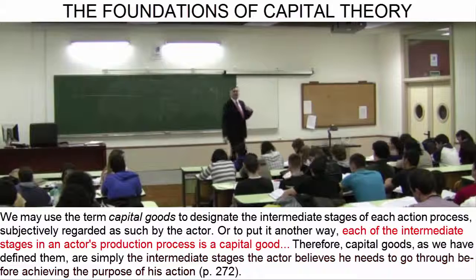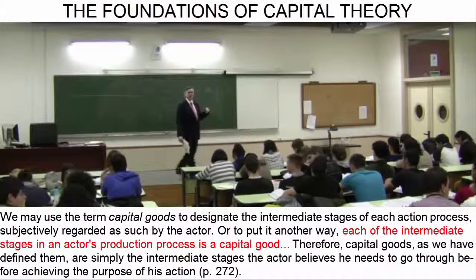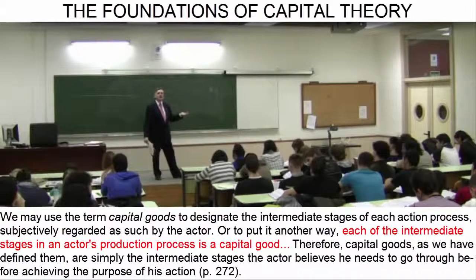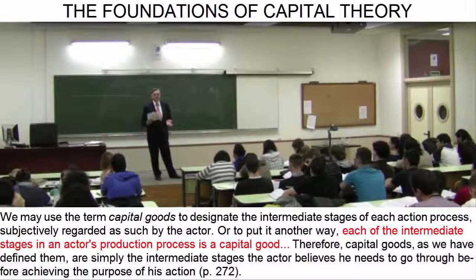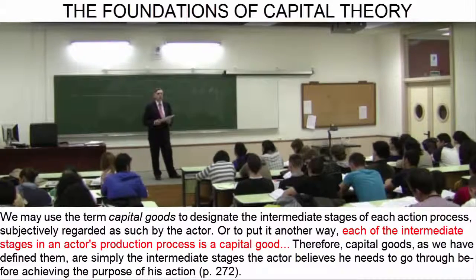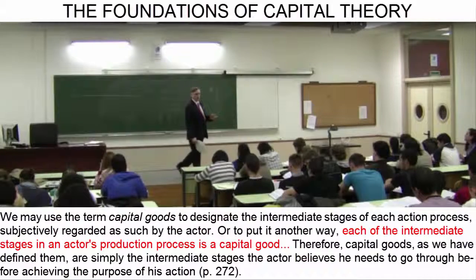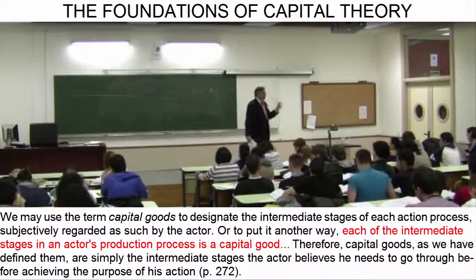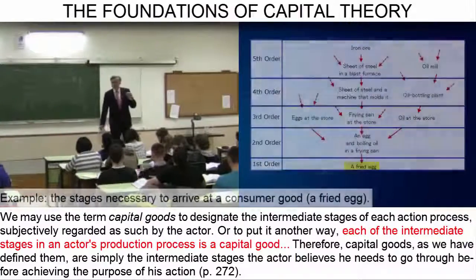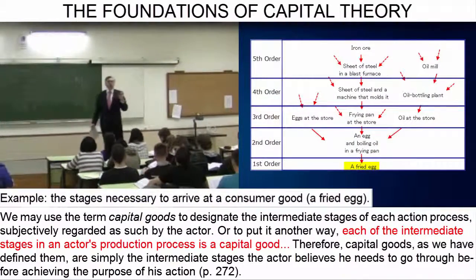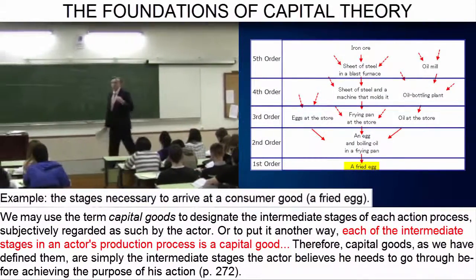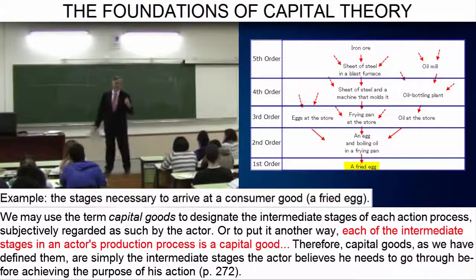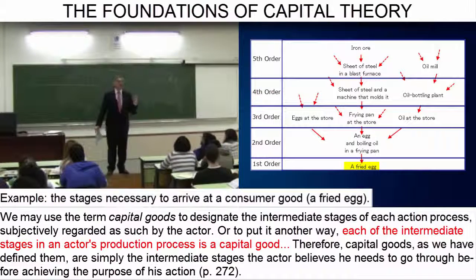Therefore, each of these intermediate stages we must pass through materializes in the form of a capital good. As an example, let us imagine a specific production process or action. We are hungry, and we are going to creatively satisfy our need with a fried egg. But before we arrive at a golden, perfectly prepared fried egg on our plate, with a pinch of salt on top and ready to be eaten,